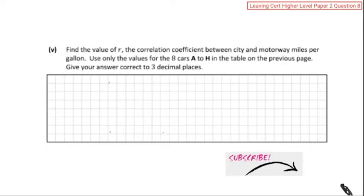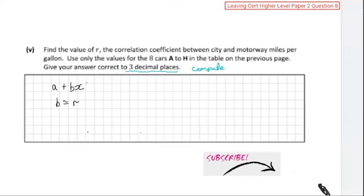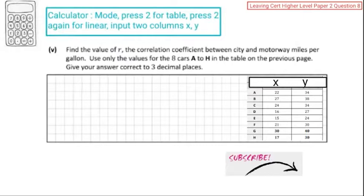Let's look at part 5: find the value of R, the correlation coefficient. If we're going to do it with the actual graph, it would be the slope — A plus BX — where B would be approximately the coefficient of correlation. But we want it to three decimal places, so we're going to compute it with the calculator. Go into mode and press 2 for the table, then press the second option again for the linear graph and get A plus BX.